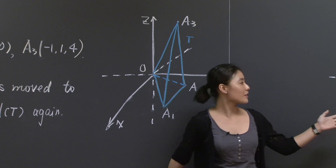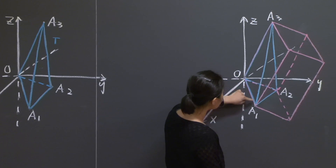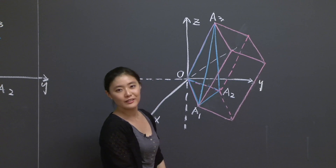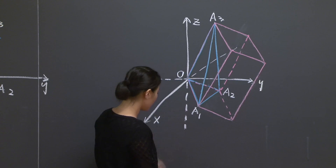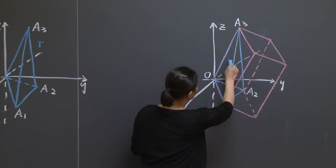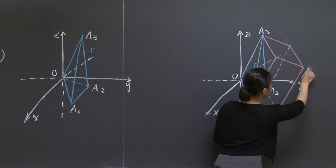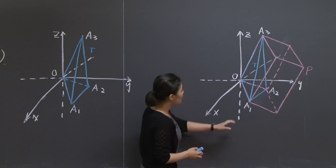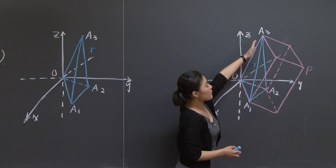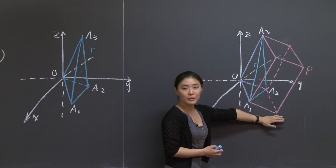Now let's move on to this picture. I have drawn this parallelepiped in red chalk, so the blue part is my original T. The red part — let me call it P — is the parallelepiped spanned by edges OA1, OA2, and OA3. That's the parallelepiped I'm going to work with.